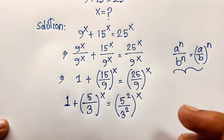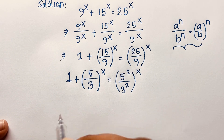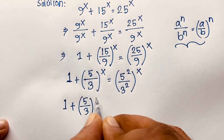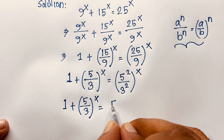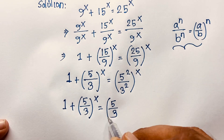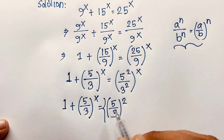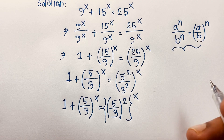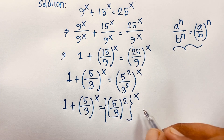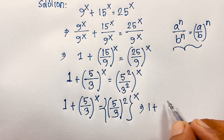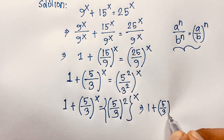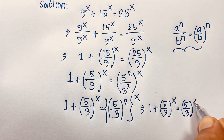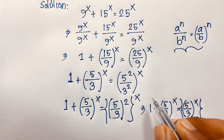I solve this question step by step. Then here, 1 + (5/3)^x = (5/3)^(2x). You can see this expression: it will be 1 plus (5/3)^x equals (5/3)^x whole to the power 2.